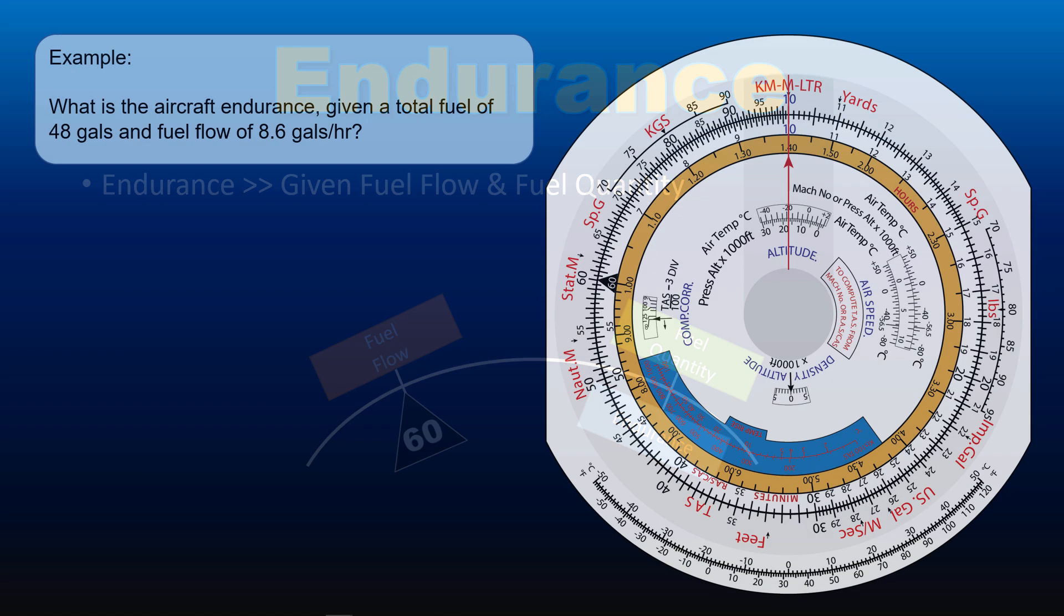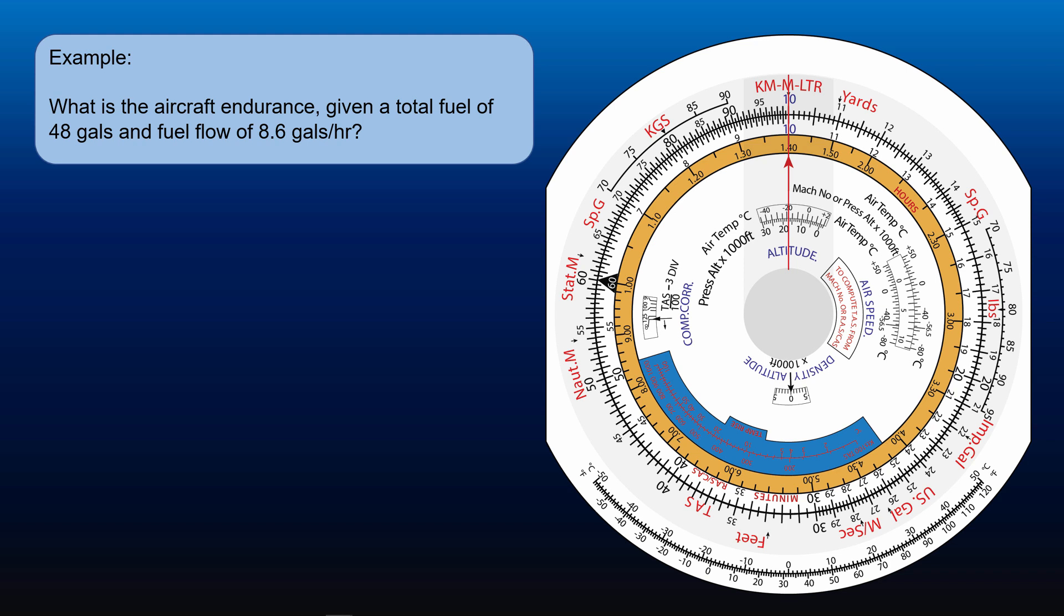An example will help you to see the procedure being used. What is the aircraft endurance given a total fuel of 48 gallons and fuel flow of 8.6 gallons per hour? First, we get the approximate figure. Round up 48 gallons to 50 gallons.